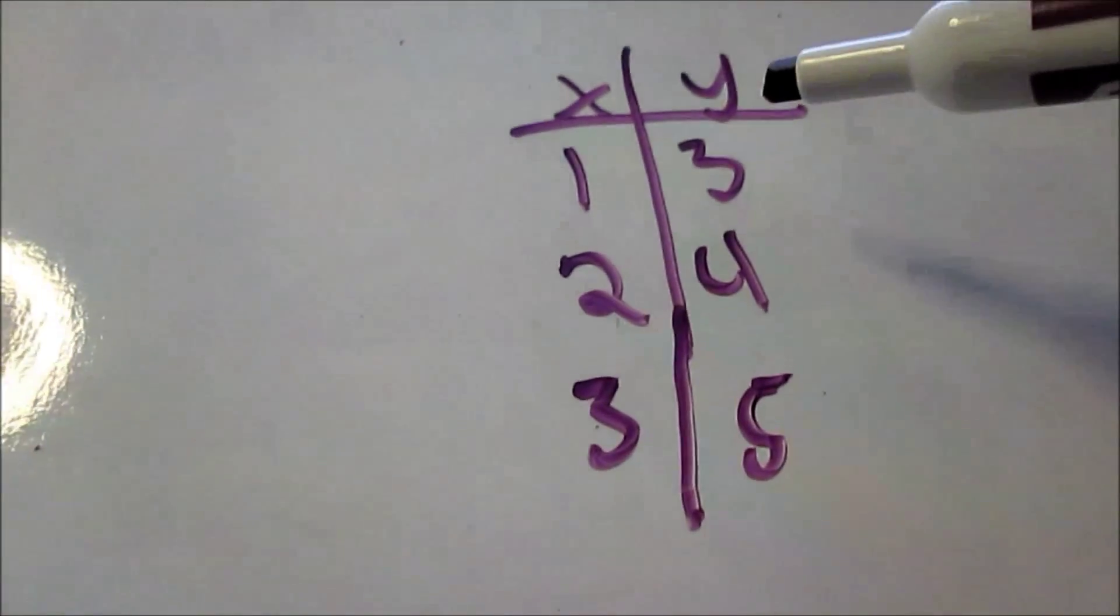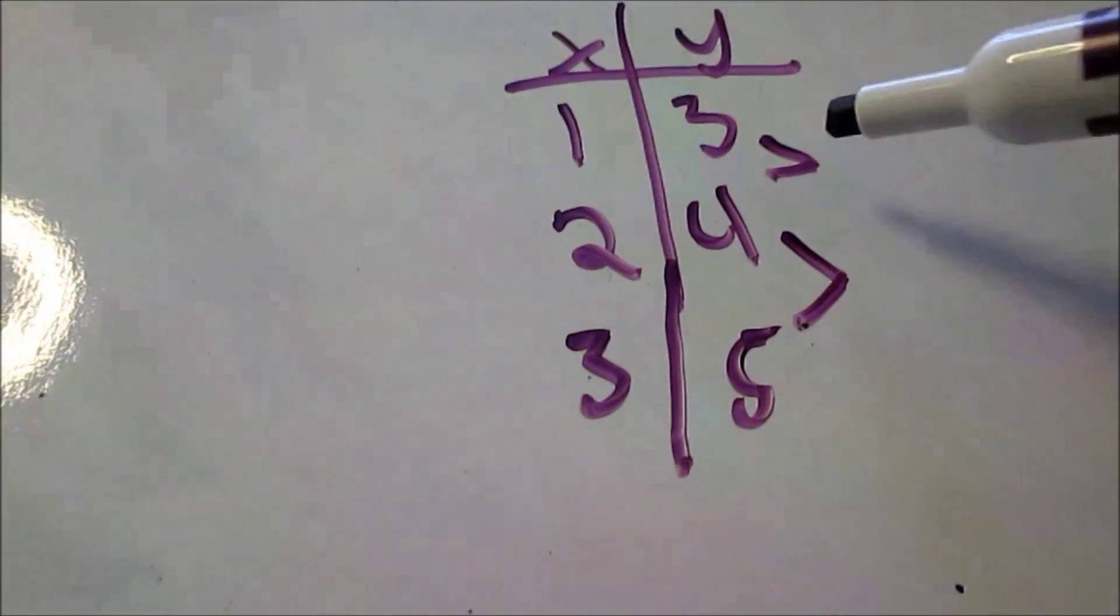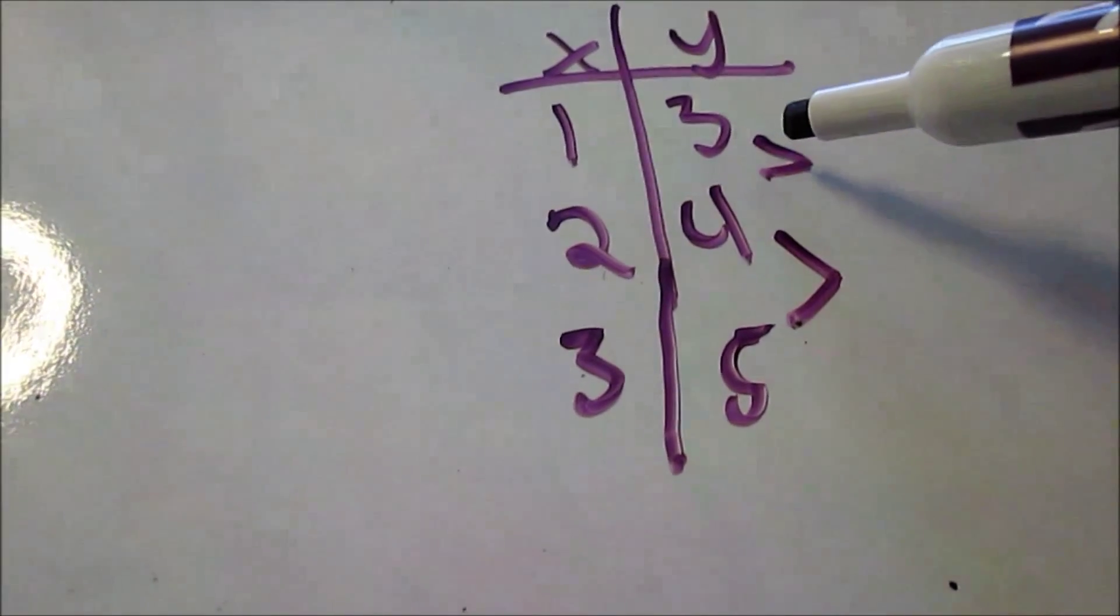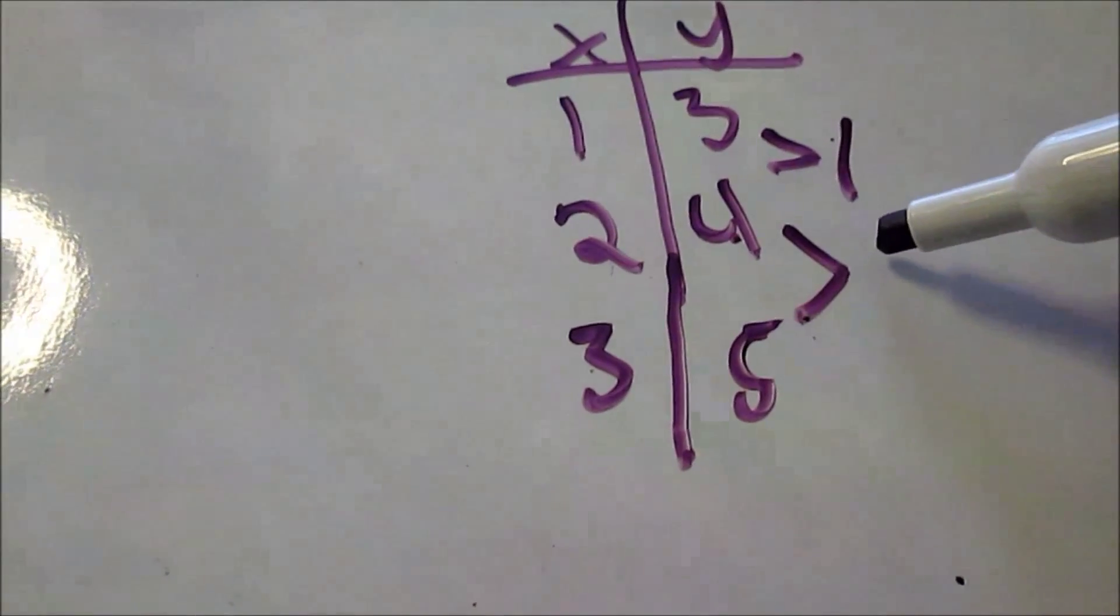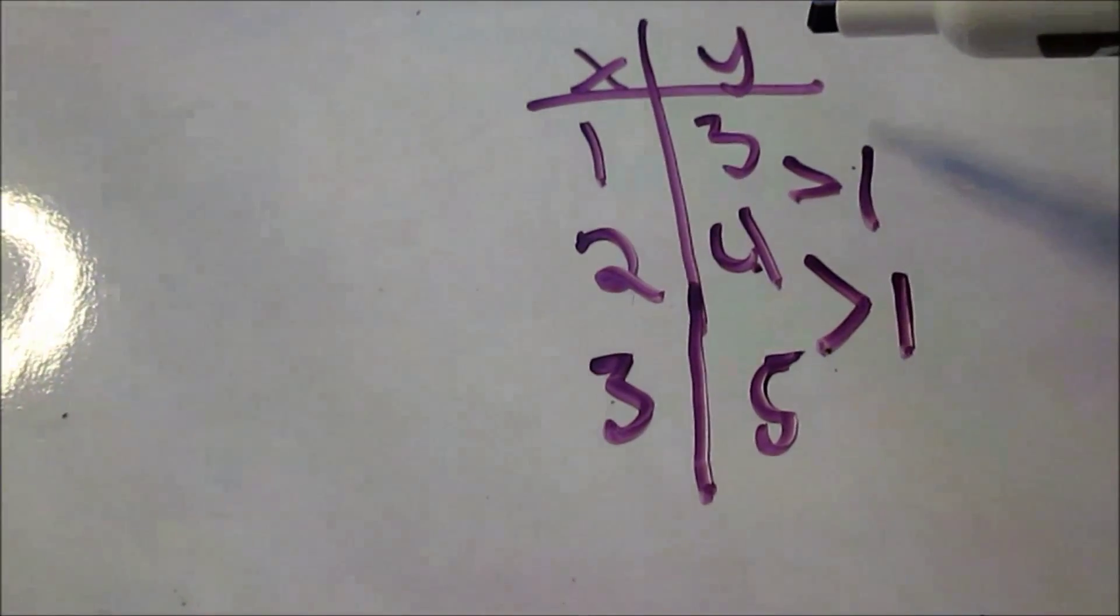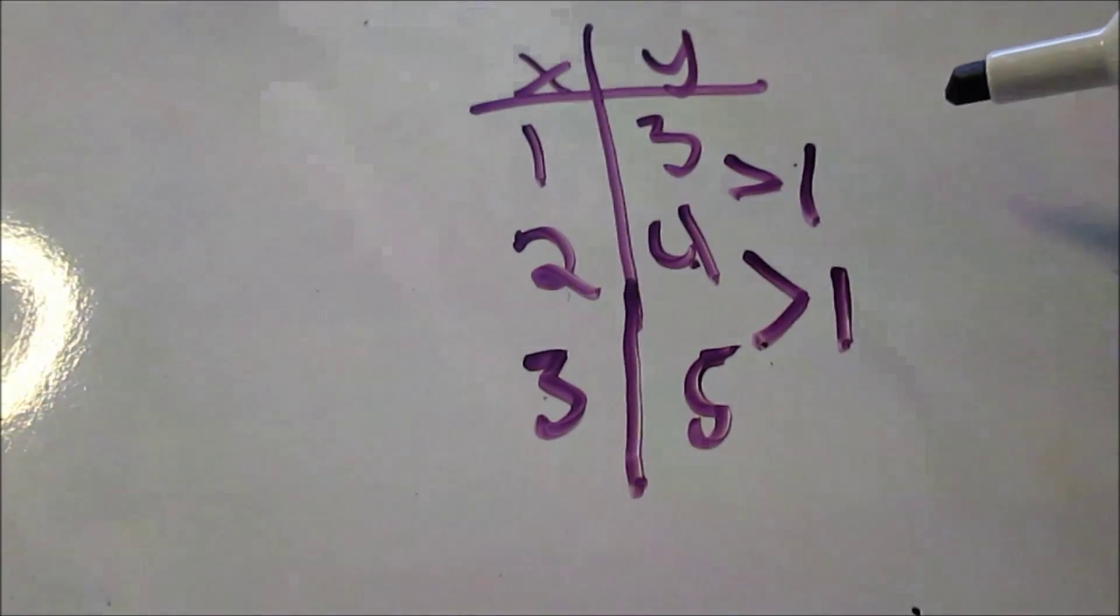Now to write the rule, I need to know the change. On the right side, change in y. Three to four, that's an increase in one. Four to five, that's an increase in one.